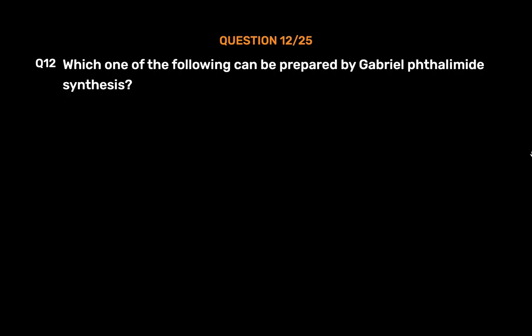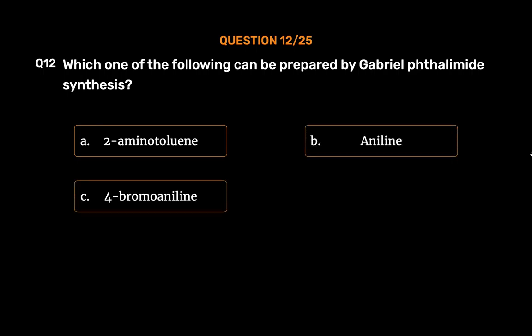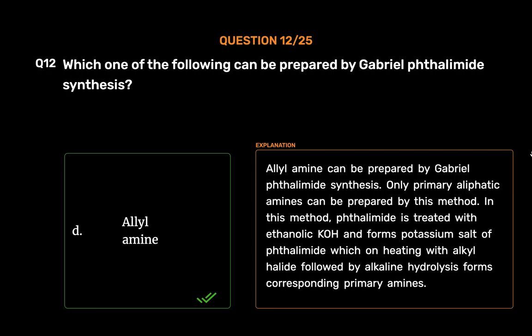Question number 12. Which one of the following can be prepared by Gabriel phthalimide synthesis? Option A, 2-aminotoluene; Option B, aniline; Option C, 4-bromoaniline; Option D, allylamine. The correct answer is Option D, allylamine. Only primary aliphatic amines can be prepared by this method. In this method, phthalimide is treated with ethanolic KOH to form potassium salt of phthalimide, which on heating with alkyl halide followed by alkaline hydrolysis gives the corresponding primary amine.